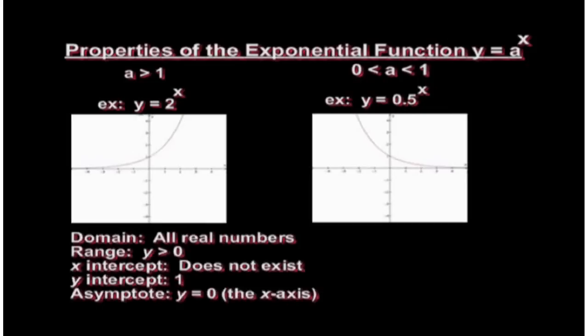So regardless of whether our graph curves up to the right or down towards the right, the domain of the exponential function y equals a to the x will be all real numbers, goes to the left forever and to the right forever. The range is y greater than 0, only positive y values are permitted. The x-intercept does not exist because it never touches the x-axis. The y-intercept will always be 1. This means that all exponential graphs have a y-intercept of 1. And the asymptote is the x-axis, or the line y equals 0.